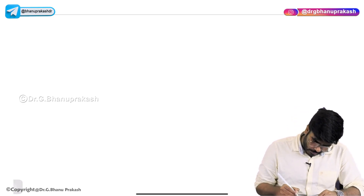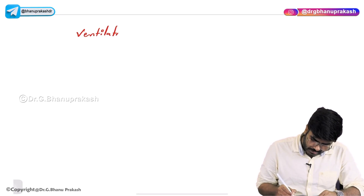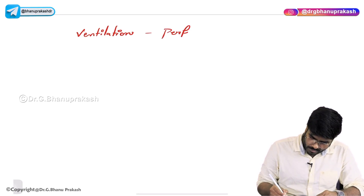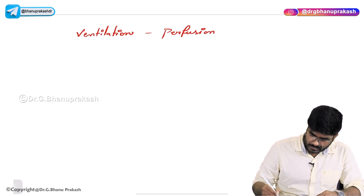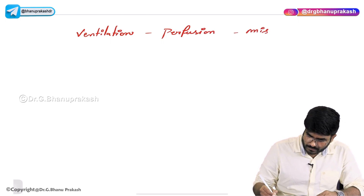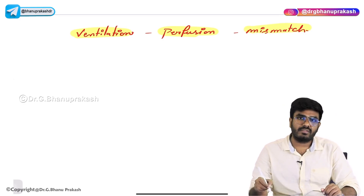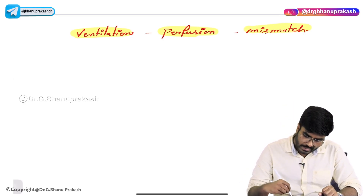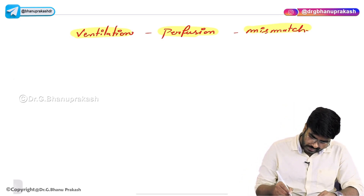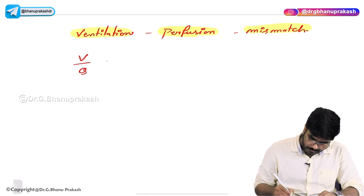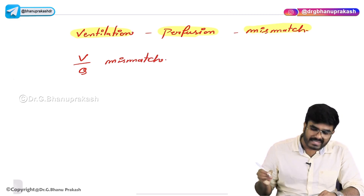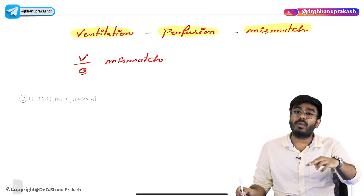Welcome back. In this video, let's discuss ventilation-perfusion mismatch. We have already seen ventilation-perfusion ratios in the apex, middle lobes, and base of the lungs. Now let's discuss VQ mismatch — what does it mean? There is a mismatch between ventilation and perfusion. For example, ventilation is good but perfusion is affected, or perfusion is good but ventilation is affected.